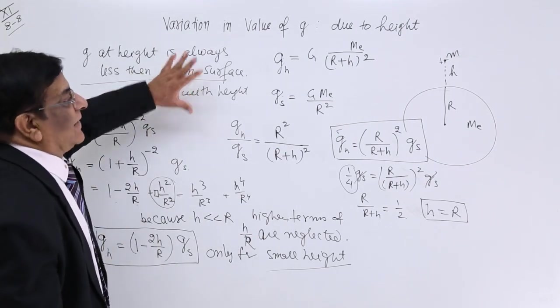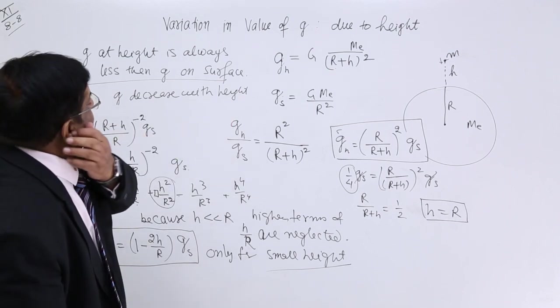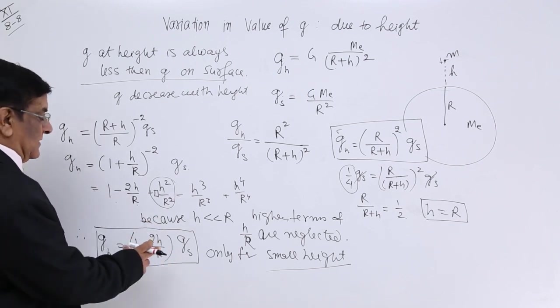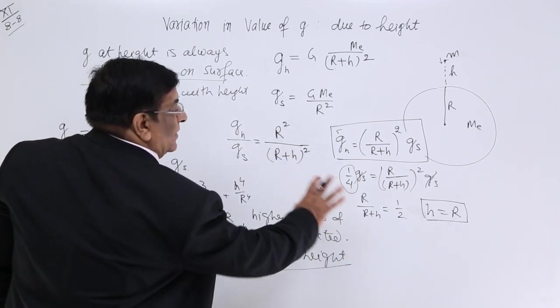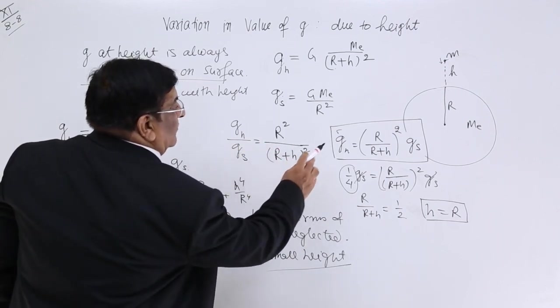So this is the difference of application which students must take note. Okay. So at height, we remember, the acceleration due to gravity will always decrease. This is for small height, this is for larger height. So these calculations we have already done.